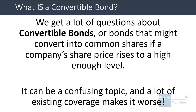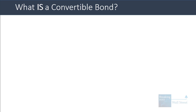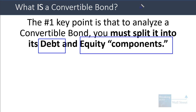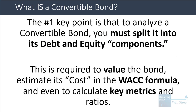It can be a confusing topic, and I think a lot of the existing coverage about convertible bonds actually makes it more confusing. So we're going to clarify some of the most important points here. The most important point is that to analyze a convertible bond, you need to split it into its debt and equity components. You have to do this to value a bond, to estimate its cost for use in the WACC formula for calculating the discount rate, and even when calculating key metrics and ratios.